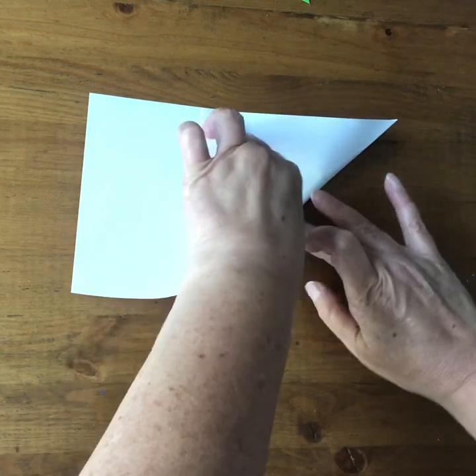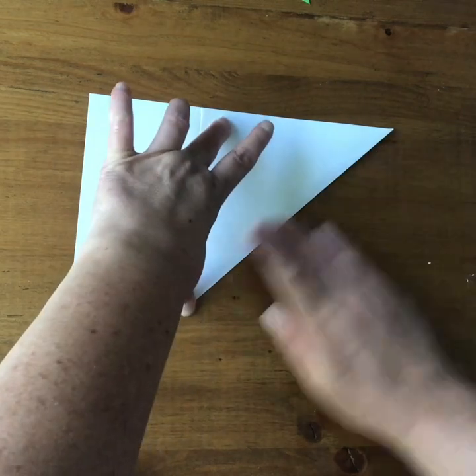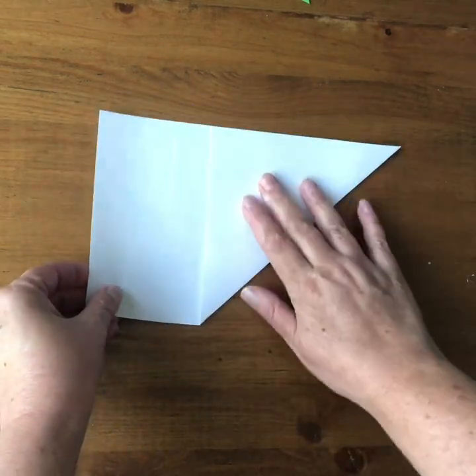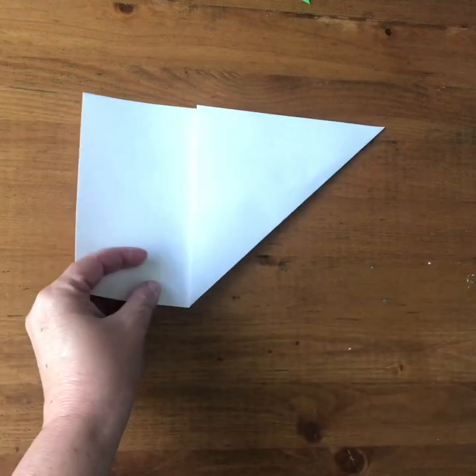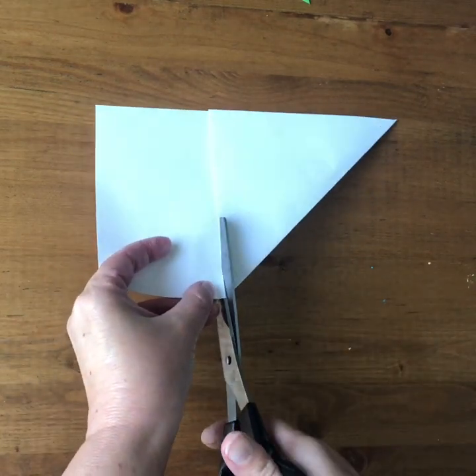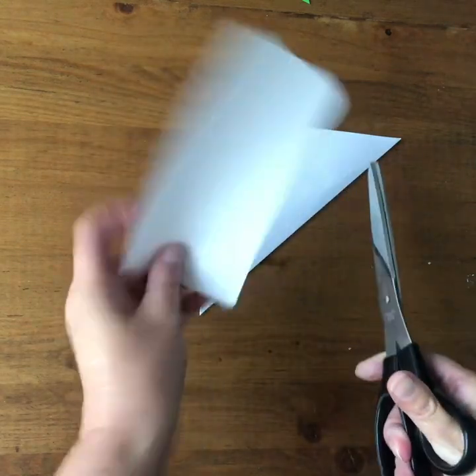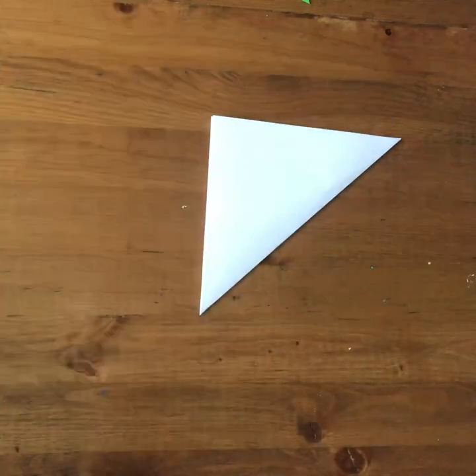And then I can start creasing along this diagonal here. And you can see now that we've got a triangle on this side and a smaller rectangle here. And I can take my scissors and cut right along that edge. And you can use this rectangular paper to make a bookmark or use it for something else.